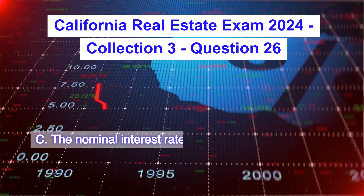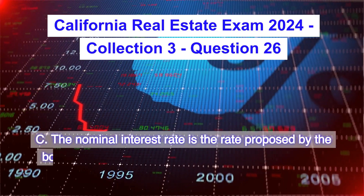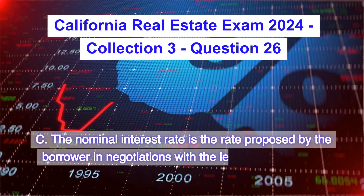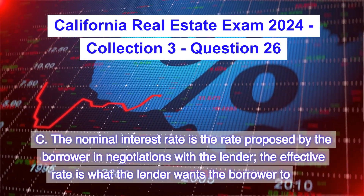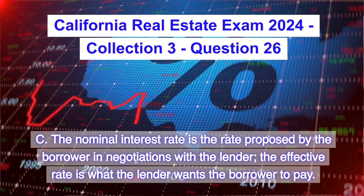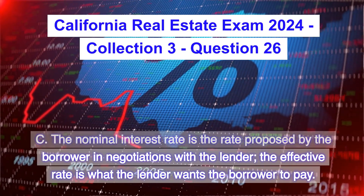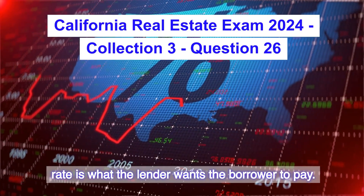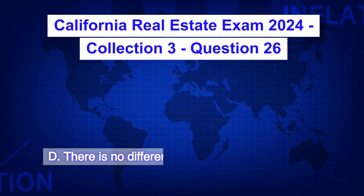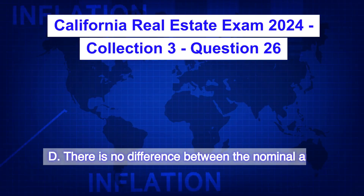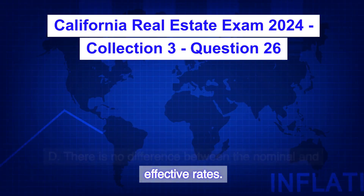C. The nominal interest rate is the rate proposed by the borrower in negotiations with the lender; the effective rate is what the lender wants the borrower to pay. D. There is no difference between the nominal and effective rates.